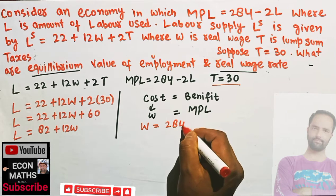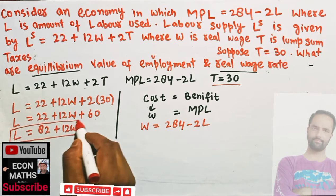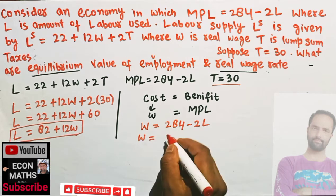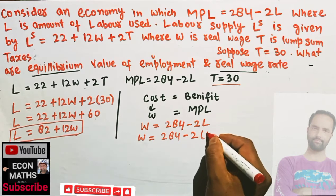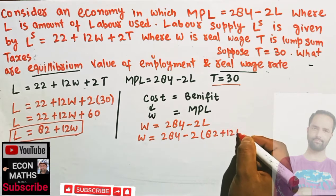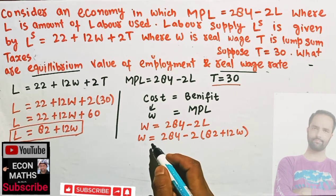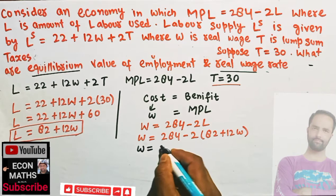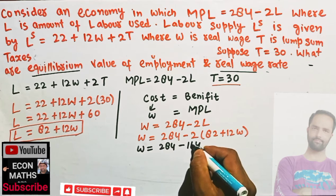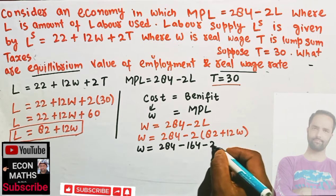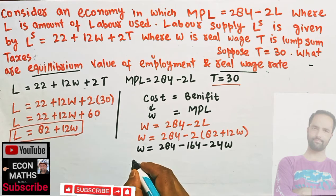So we set wage rate equal to marginal product of labor, which is given as 284 minus 2L. We also know labor supply L equals 82 plus 12W. Plugging in, we get 284 minus 2L equals 82 plus 12W, leaving only one variable. Rearranging: W equals 284 minus 82, and we transpose the 2L and the 24W terms.